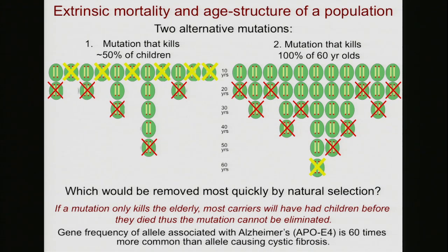Indeed, genes that have a greater impact on children tend to be rare compared to those that are only harmful in older people. For example, the gene frequency of the allele associated with Alzheimer's — a form of dementia — is 60 times more common in the population than the allele that causes cystic fibrosis and much mortality in children.